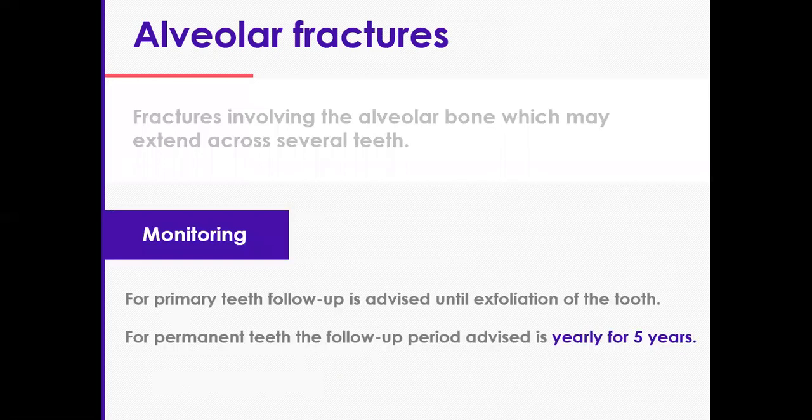Then monitor until exfoliation in primary teeth. After four weeks, you remove the splint. Follow-up is at four weeks, three, six, and twelve months, and then annually in permanent teeth. In both dentitions, make sure you remove the splint at four weeks and carry out your reviews and follow-ups with clinical and radiographic examination.